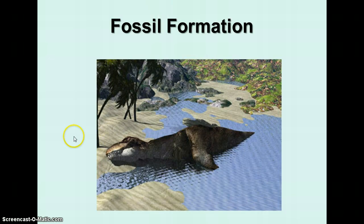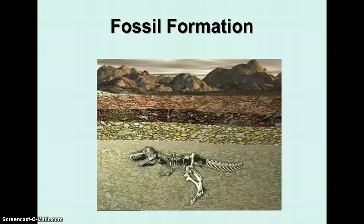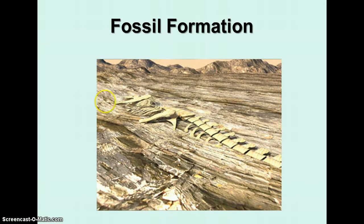Fossils form when a specimen, like a T-Rex, gets covered in water and eventually covered in sediment. After many layers of sediment are added on top, the rock forms over time and the bones embedded there fossilize. Eventually the rock may be uplifted and eroded away so that the fossil is found closer to the surface.